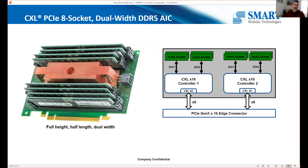Our 8-DIMM add-in card is in the HHHL dual-width form factor, using two CXL controllers — each with two memory channels supporting up to two DIMMs per channel, for eight DIMMs total. It does exceed the 75-watt edge connector limit, so there's an auxiliary power connector. One of these cards can support up to a terabyte of memory depending on the module capacities installed. Engineering samples will be available this quarter.